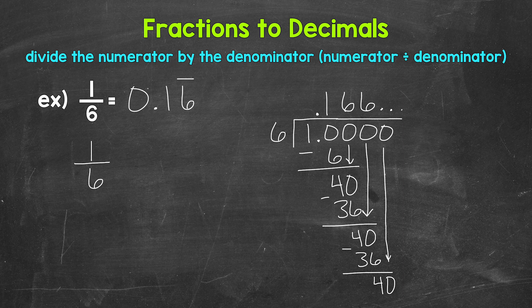So 1 sixth is approximately—and I'm using the approximately symbol here since we are rounding, it's not exact. We have a 1 in the tenths place with a 6 in the hundredths. So this rounds up to 2 tenths. So 1 sixth is approximately 2 tenths.